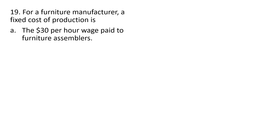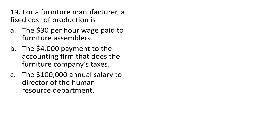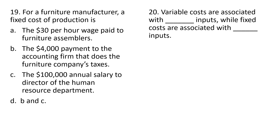For a furniture manufacturer, a fixed cost of production is: the $30 per hour wage paid to furniture assemblers — no, that would be a variable cost. The $4,000 payment to the accounting firm that does the company's taxes — that would be true. And C would also be true: the $100,000 annual salary to the HR director. So answer choices B and C are the correct answers.